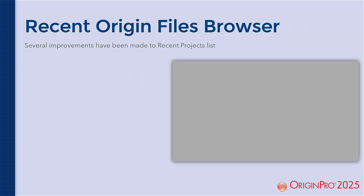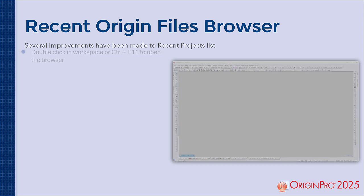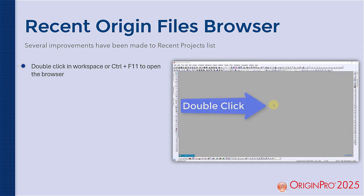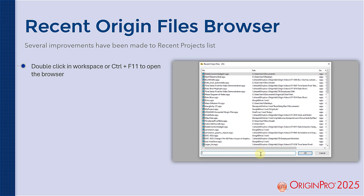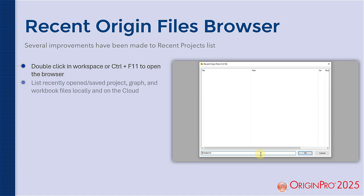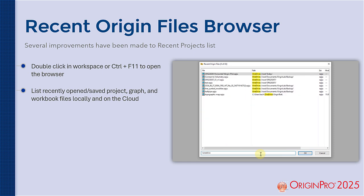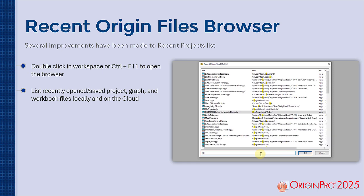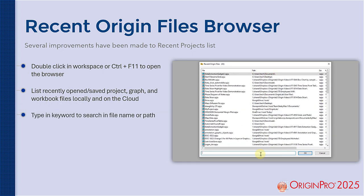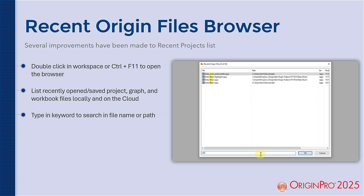Several improvements have been added to make browsing for recently opened Origin files much easier. This includes a powerful new browser that can be opened by simply double-clicking in the blank Origin workspace. This lightning-fast browser searches local and cloud-based Origin files and allows users to filter results from the beginning or end of a file name, and it can even search within file paths.